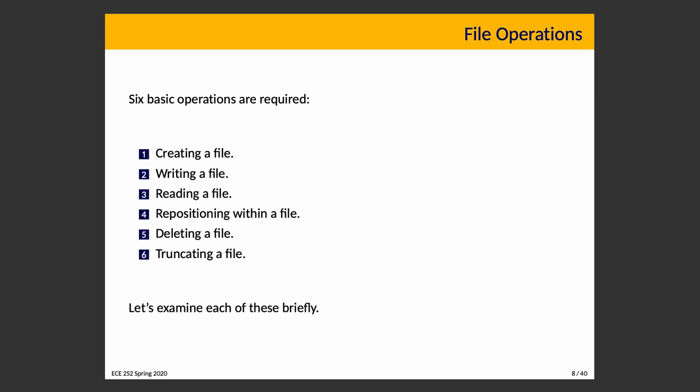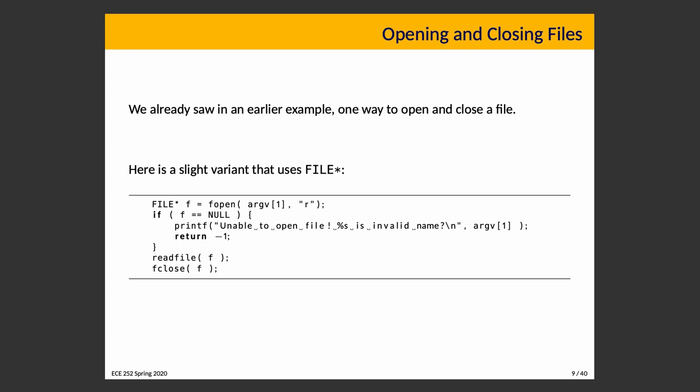We'll look at brief code examples demonstrating some system calls. Previously we looked at reading a file using the open system call and the close system call, which operated using a file descriptor (an int). The variant shown here uses a file pointer, which is a similar but slightly more user-friendly way of doing the same thing. We will become familiar with both as we move through the course.